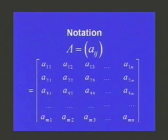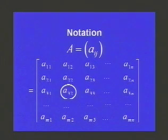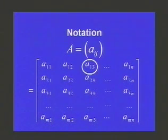For example, A sub 3,2 is in the third row, second column. Whereas A sub 1,3 is in the first row, third column.